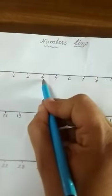Next is 5. What will come before 5? 5, 4. 5 ke pehle kya aega? 4.